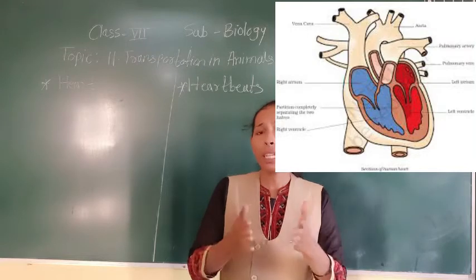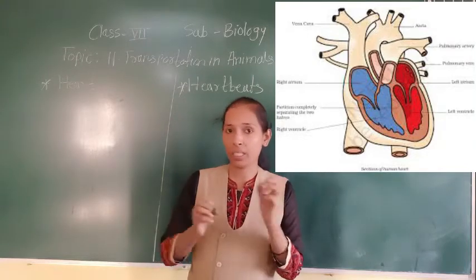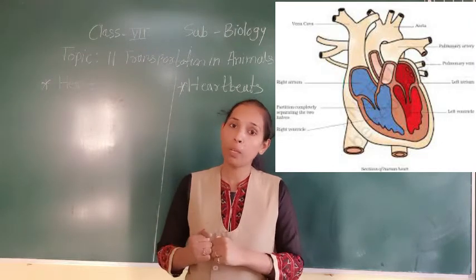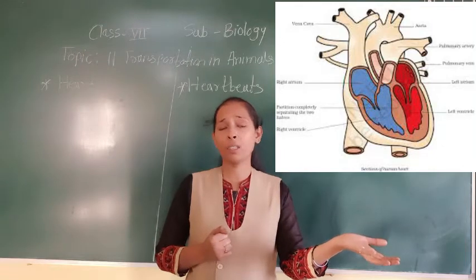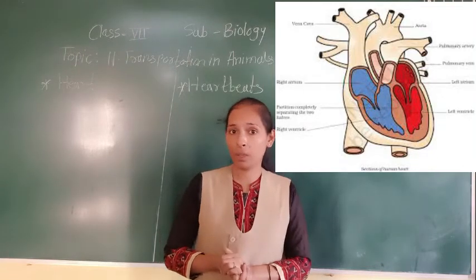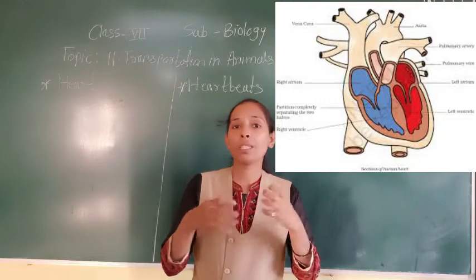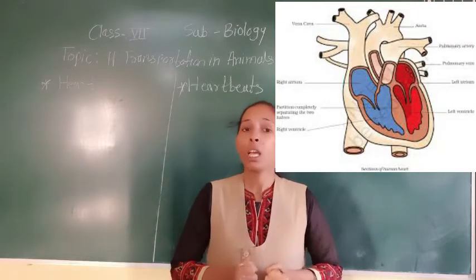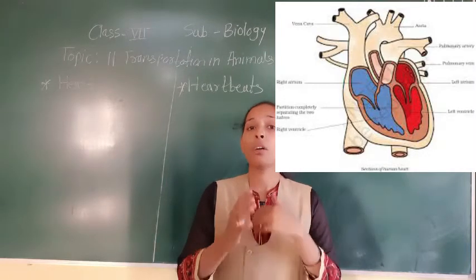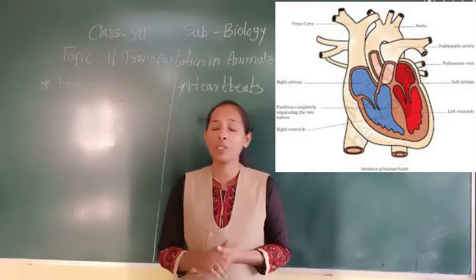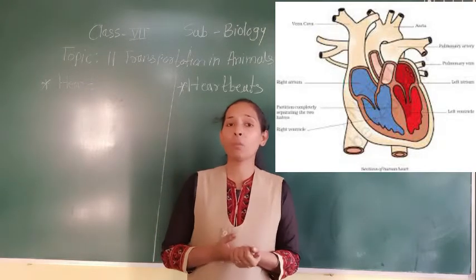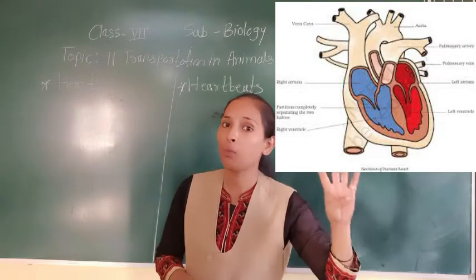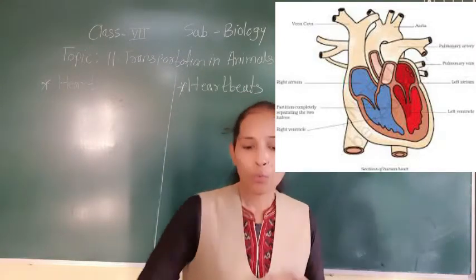In the heart, arteries carry oxygen-rich blood while other vessels carry carbon dioxide-rich blood. There is a possibility that the oxygen-rich blood and the carbon dioxide-rich blood could get mixed with each other. To avoid this mixing, the heart has four chambers.